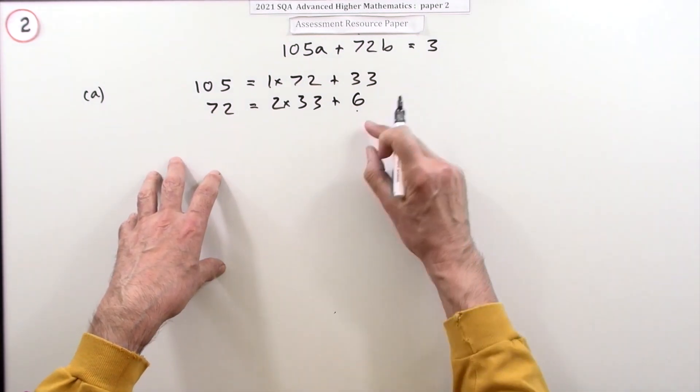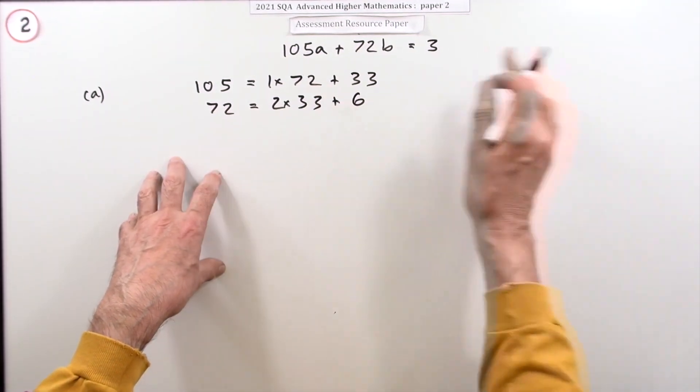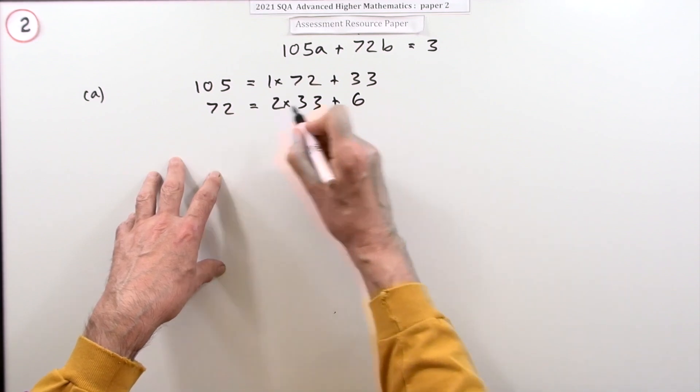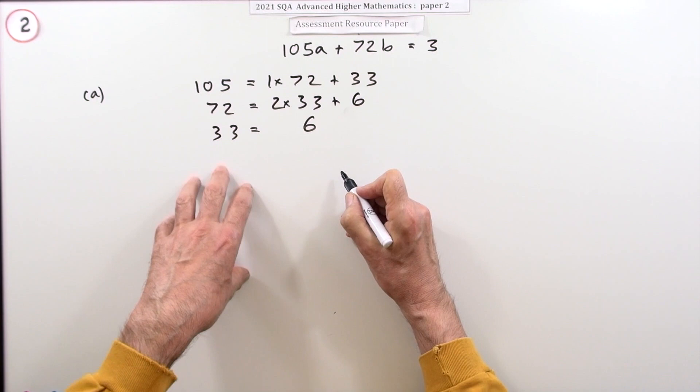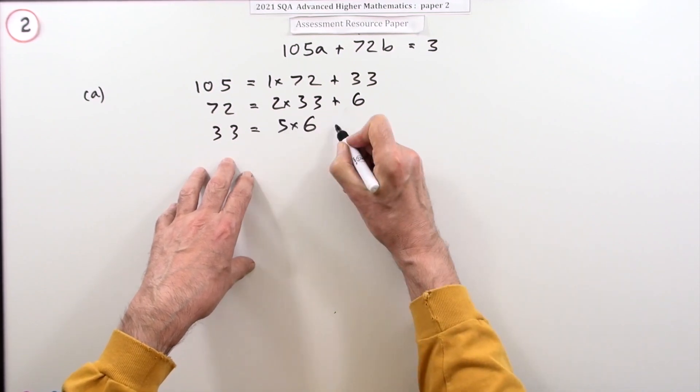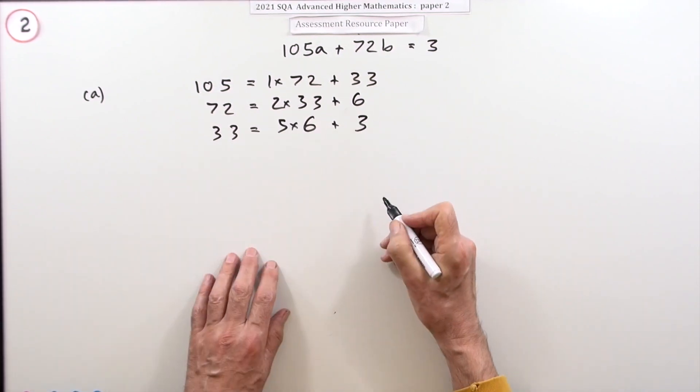What about six? Does six go into 33? No, there's five of them and three left over. We'll try again with three.